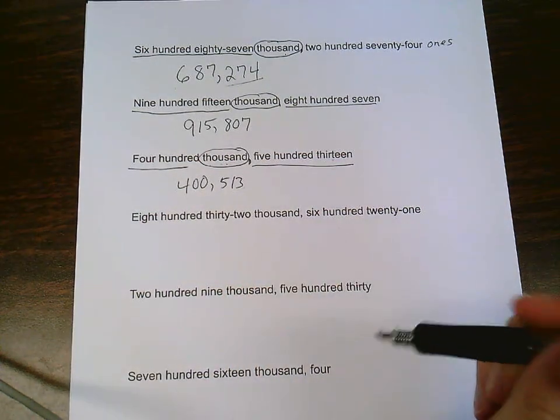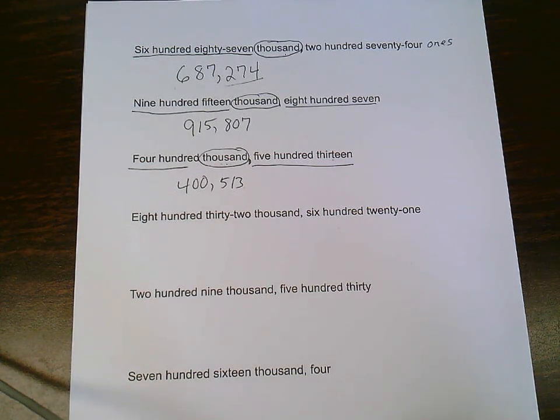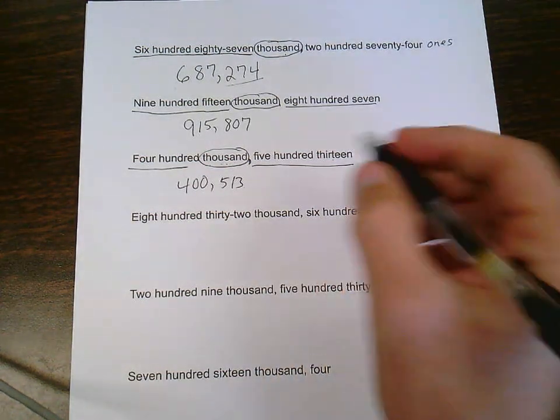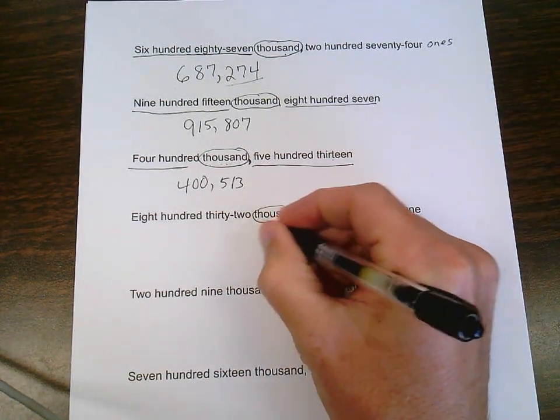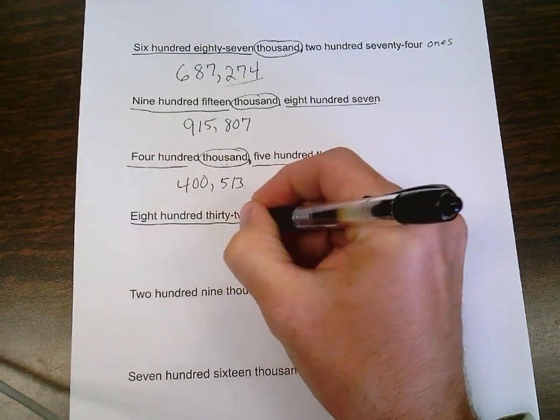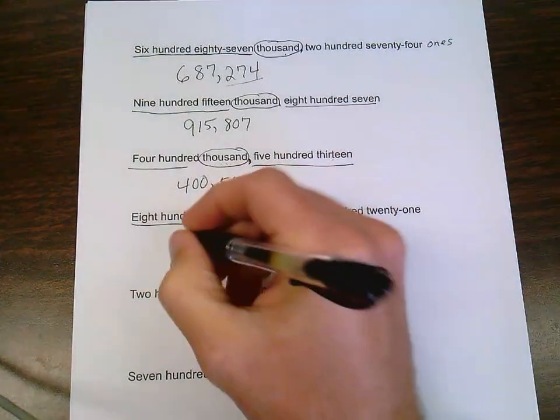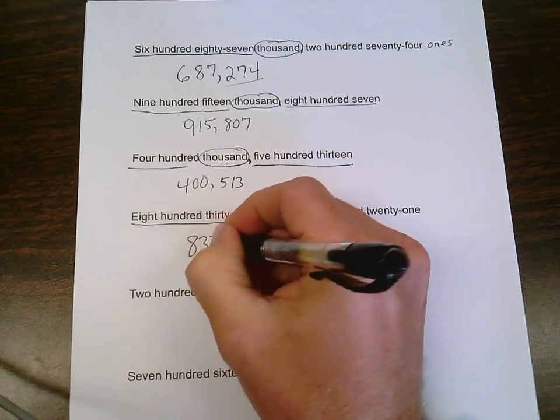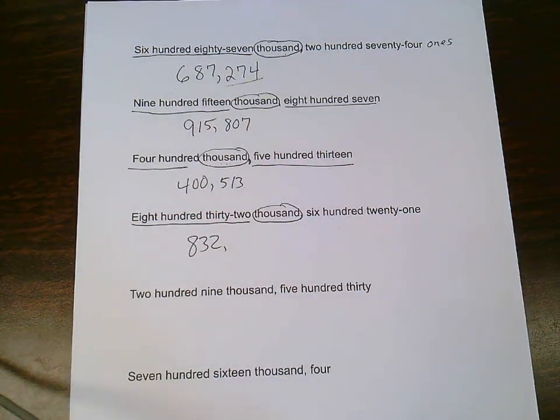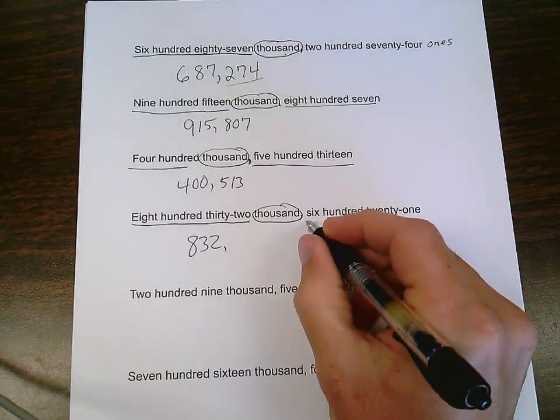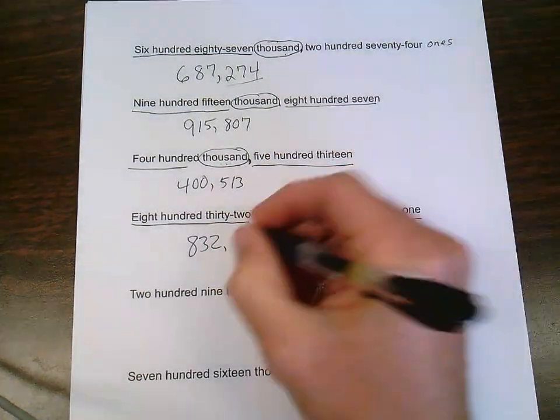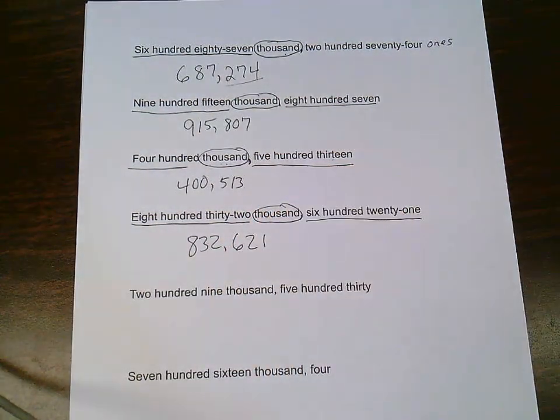Next one, 832,621. So, I look at the word in front of the comma, thousand, all of that is going to be in the thousand period. 832, comma, in the thousand period. Then 621 in the ones period.